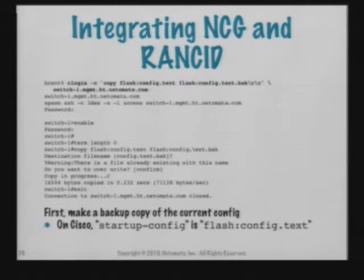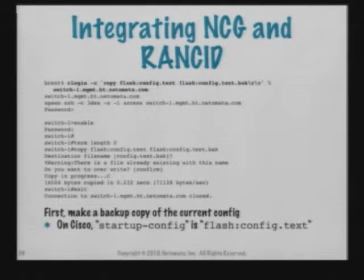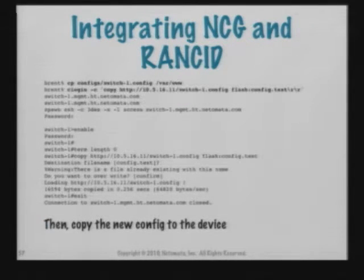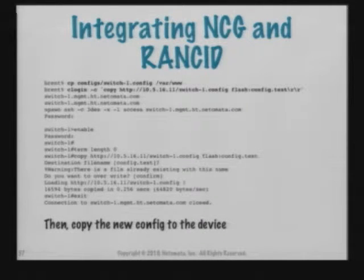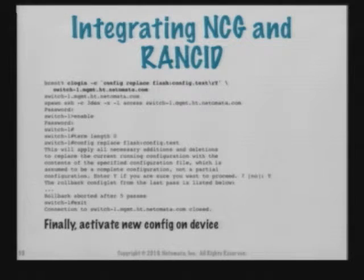Here's an example from my lab. If you download these slides you can read this in more detail. Basically this uses the clogin program — the Cisco login program that's part of Rancid — to copy a generated config file for a Cisco onto the Cisco and make it the startup config. So the next time that Cisco is rebooted, that's the config it's going to use. There's also another example of copying the config onto the Cisco using HTTP to pull it from the Cisco side, and another example using config replace on Cisco.